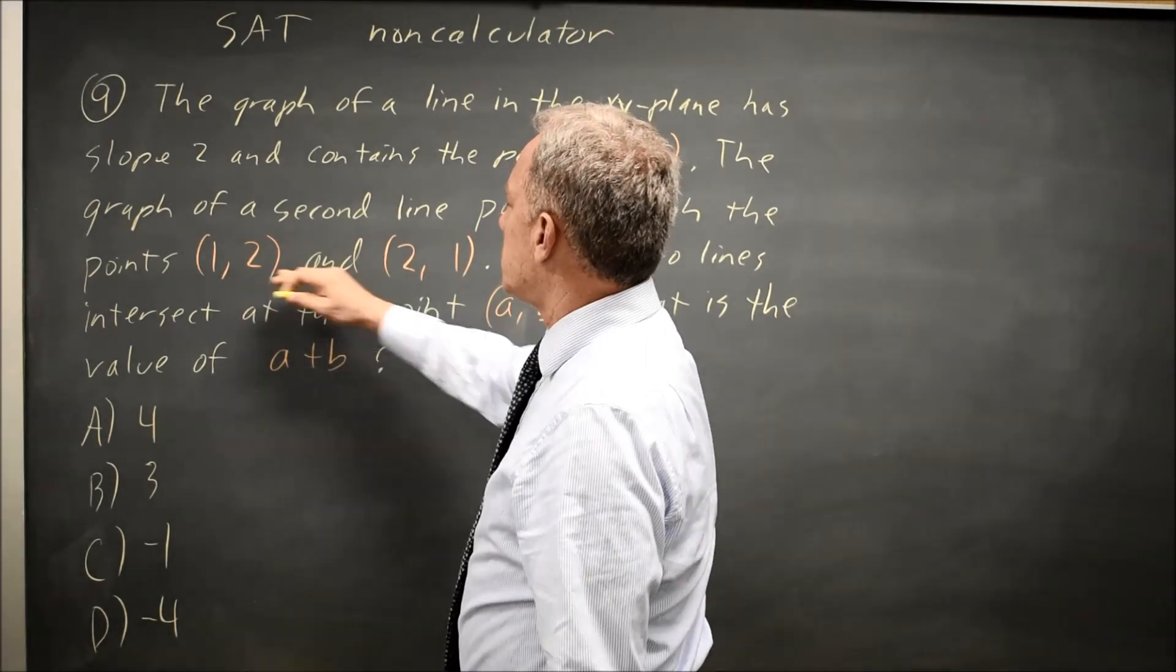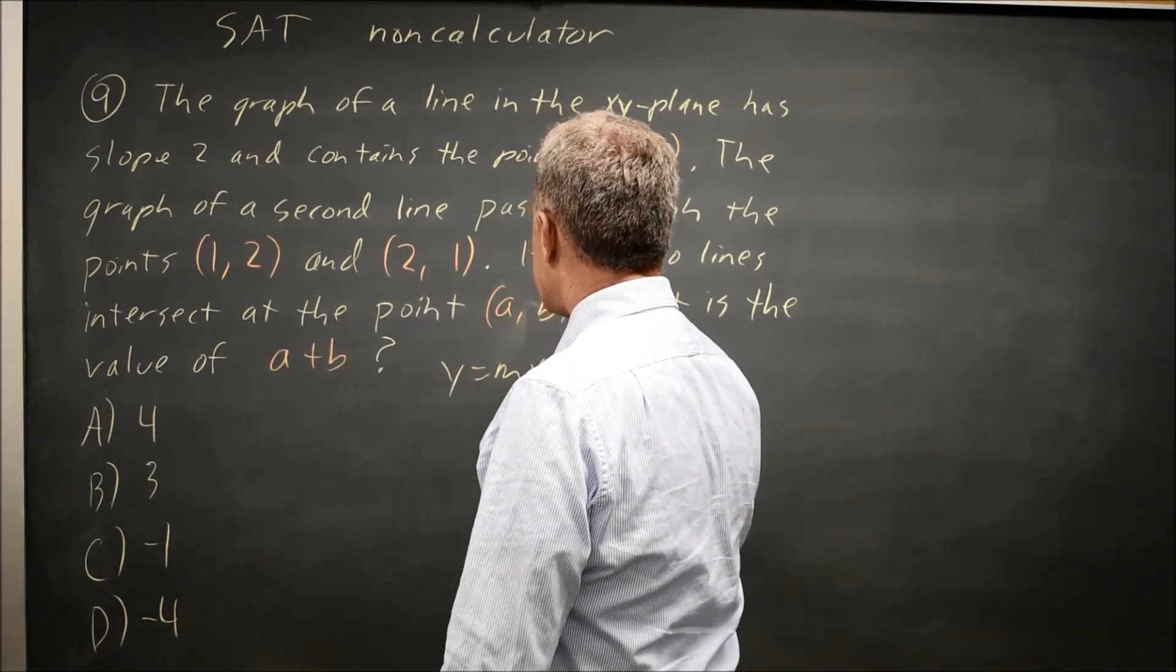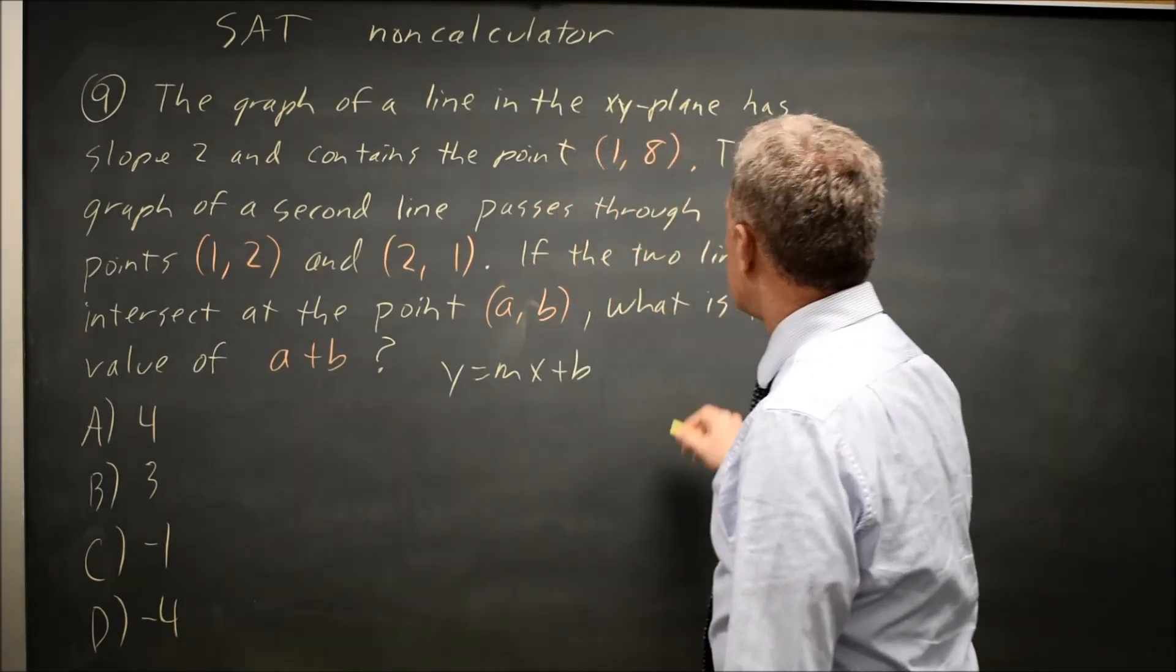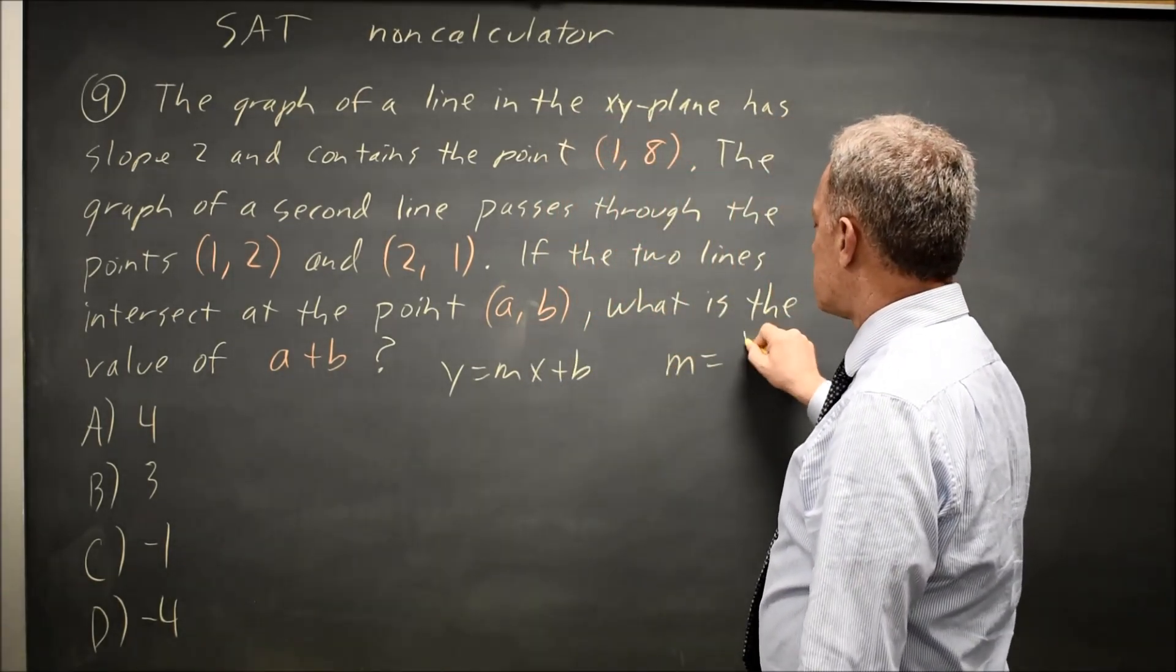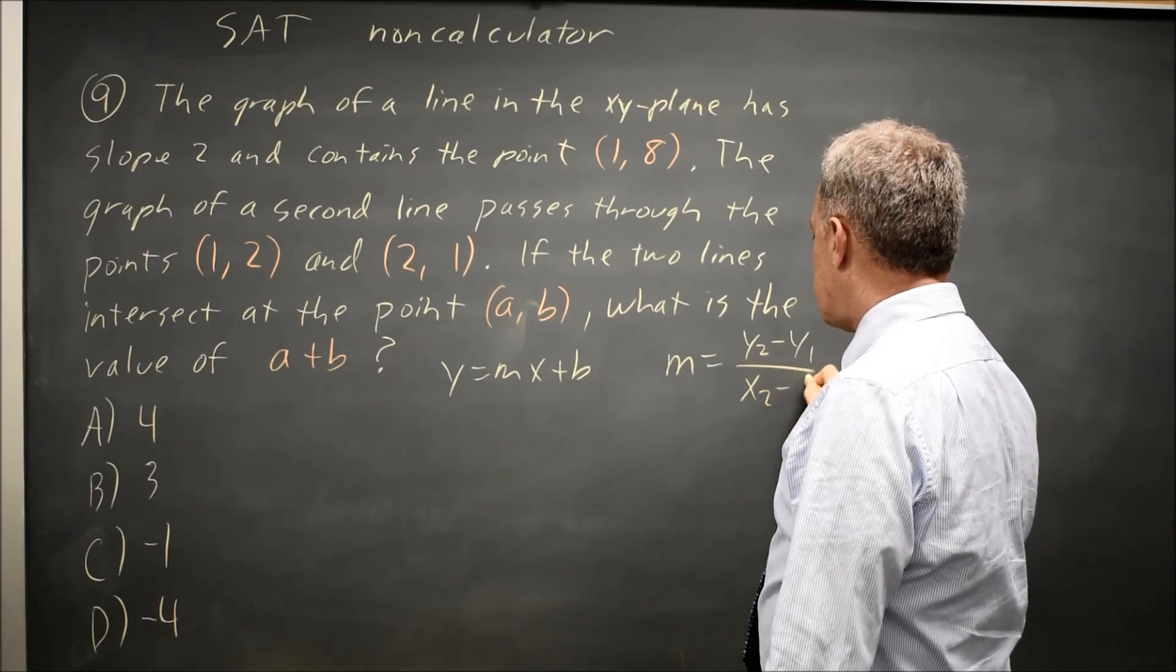So let's find the line through these two points. That's y equals mx plus b, where m equals y2 minus y1 over x2 minus x1.